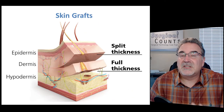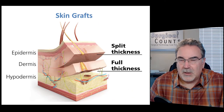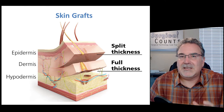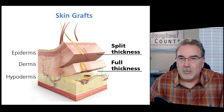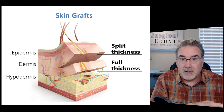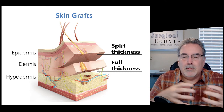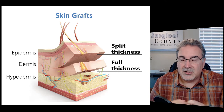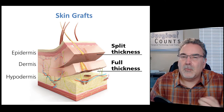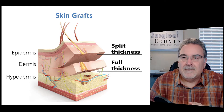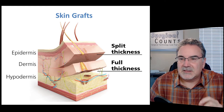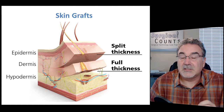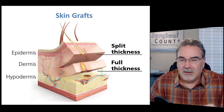To repair skin that has been burned away or otherwise removed, we can do a skin graft — taking skin from one part of the body and moving it to a different part and reattaching it there. There is a split thickness skin graft and a full thickness skin graft.